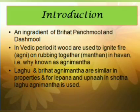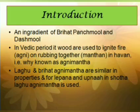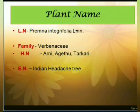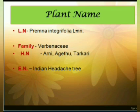Both Lagu and Brihad Agnimant are believed to be similar in properties, but it is also mentioned that for Lepan, that is topical application, and Upanaha using a poultice in inflammatory conditions, Shudra Lagu Agnimant is preferred. Premna Integrifolia is the Latin name of Brihad Agnimant whereas Clarodendron Phlomidis is the Latin name of Lagu Agnimant. Both plants belong to the family Verbenaceae. In English, Brihad Agnimant is known as Indian Headache Tree.